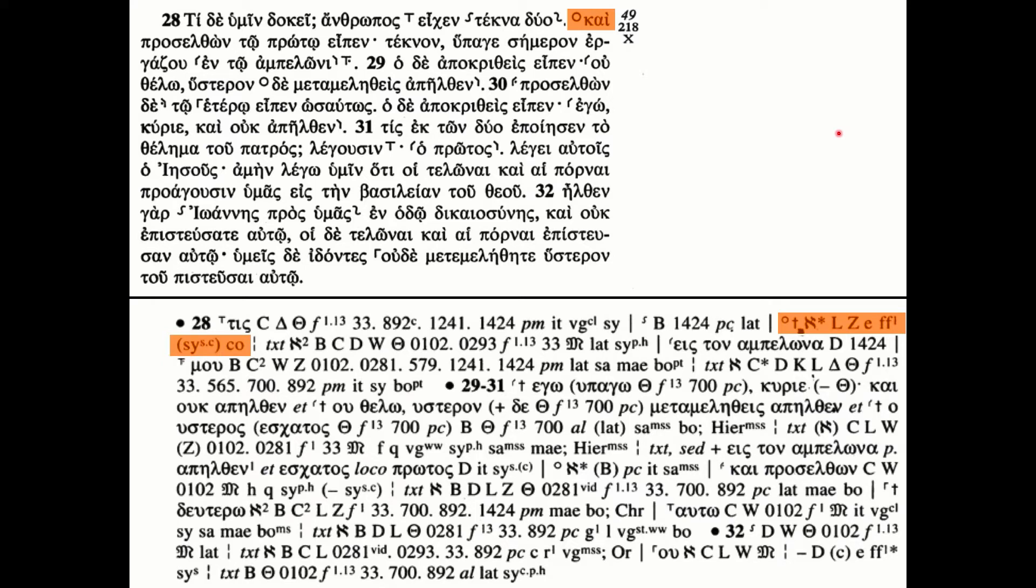The cross indicates that in the previous edition, Nestle-Aland 26, they actually did omit the word chi from their critical text. It's omitted in Aleph the original hand of the scribe, Codex Sinaiticus, Uncials L and Z, the old Latin E, FF1 and so on, Syriac and the Coptic. So all of these manuscripts omit chi.